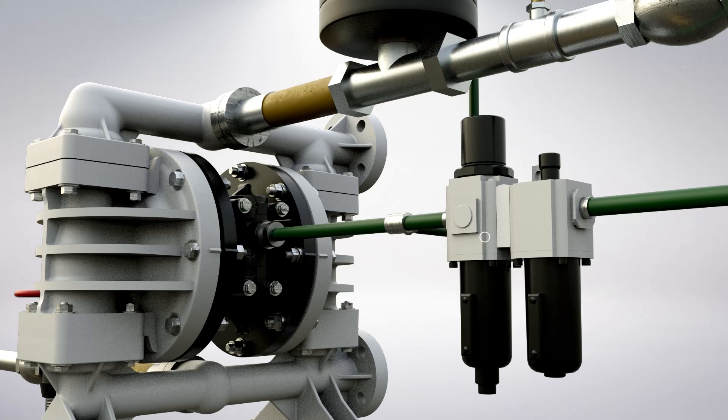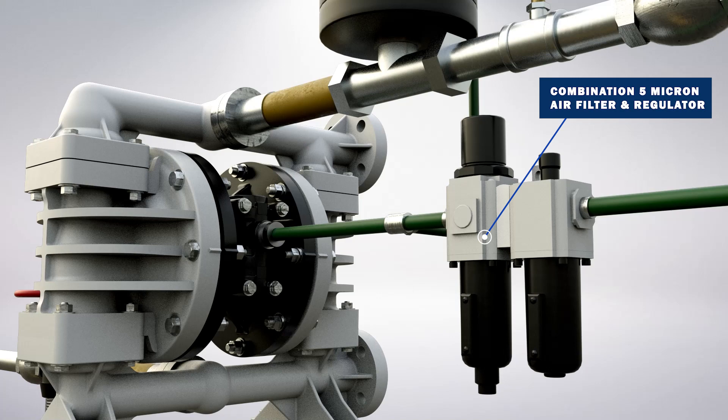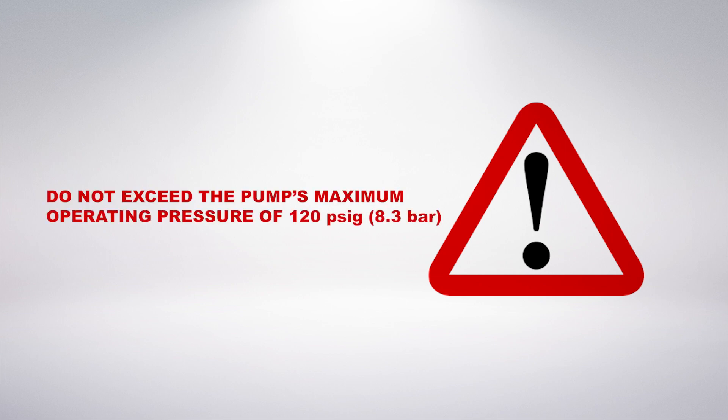For best results, the installation should use a 5 micron air filter, air valve and pressure regulator. The air filter will help eliminate potential pipeline contaminants. Do not exceed the pump's maximum operating pressure of 120 PSIG.